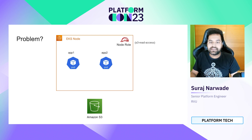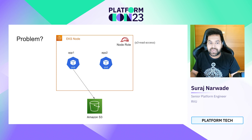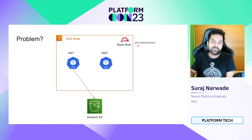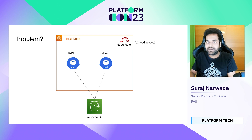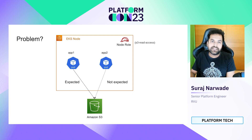Before jumping into IRSA, let's first understand the problem. Before IRSA and equivalent solutions such as KAYAM and kube2IM, this was the situation in Kubernetes on AWS. If app1 wanted to access an S3 bucket, we used to provide a node role and attach a policy granting permission to the node to access that S3 bucket. S3 read access was attached to this node role. As a side effect, even application 2 — the pod running on the same node — was also able to access the S3 bucket. App1 was expected to have access; app2 was not. In a situation where a malicious user gets access to app2, they would also be able to access the S3 bucket, which is not at all expected.